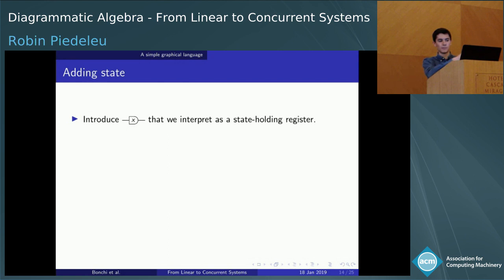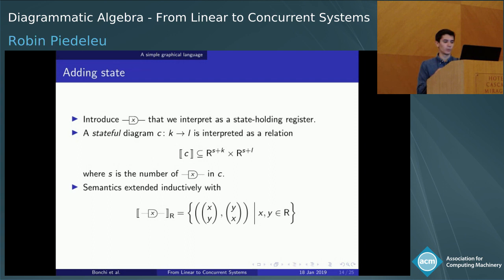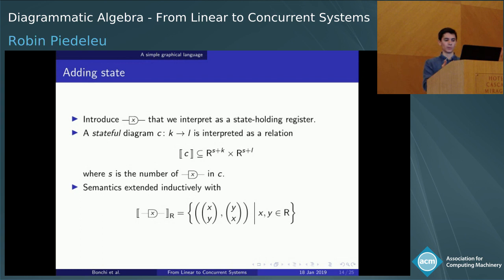This new piece of syntax forces us to modify our semantics slightly. We'll now work with relations with an extra state-passing variable that represents the register's change of value. A diagram from K to L with S registers is interpreted as a relation of the corresponding type. These can be thought of as labeled transition systems with a pair of labels for the left and right for each transition. The register itself is interpreted by a relation that exactly reproduces the operational behavior described.